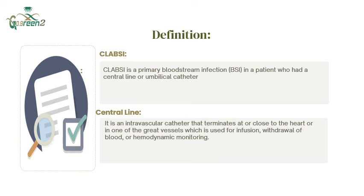When we say primary bloodstream infection, that means it is not a secondary infection — it is not related to any other infection at another site on the body. A central line is an intravascular catheter that terminates at the heart or one of the great vessels. It is used for medication, infusion of fluids and nutrition, taking blood samples, and monitoring the hemodynamic status of the patient.